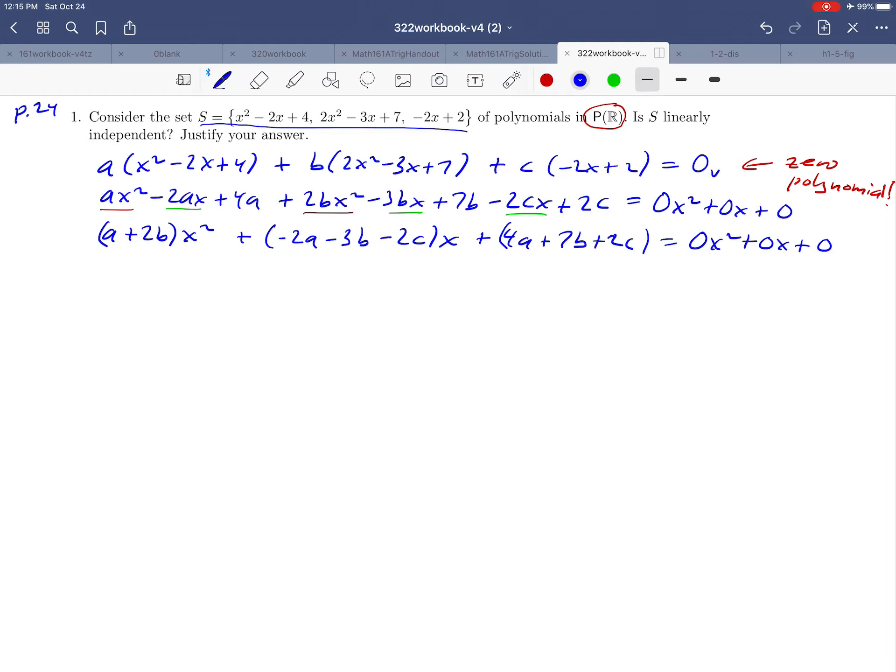And we'd like to solve that system of equations. We can do that by just noting that if we want the right and the left-hand side to be the same polynomial, then we need, for example, A plus 2B to equal 0. And we also need negative 2A minus 3B minus 2C to equal 0. And then finally, we need 4A plus 7B plus 2C equal to 0. That's a system of equations. And if we wrote it down and put it into matrix form, here's what we'd get.